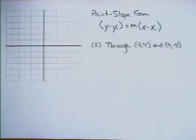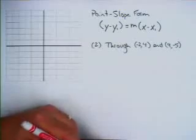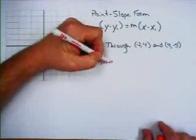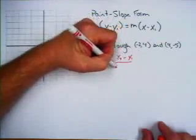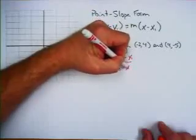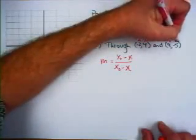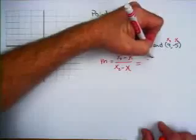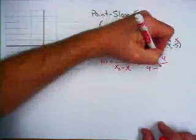Now sometimes, instead of having the slope and a point, you're given two points and you have to find the equation of the line. But we still use point-slope form — the first step is to find the slope. The equation for the slope given two points is m equals y2 minus y1 over x2 minus x1, where this is (x1, y1) and (x2, y2). So that would equal negative 5 minus 4 over 4 minus negative 2.